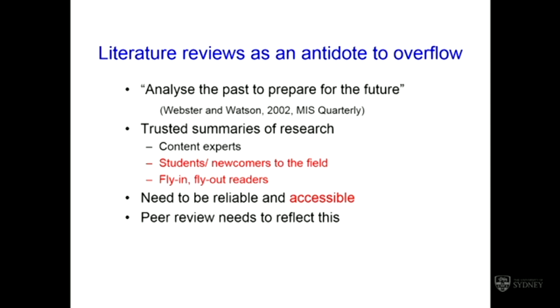Some examples of what I call fly-in, fly-out researchers — triaging results, making decisions about where their own research is going. But literature reviews are also read by newcomers to the field who intend to stay, such as students and early career researchers starting a new postdoc. Literature reviews really need to fulfil two needs: they need to be reliable, because people will believe what's written and possibly take action based on it; but the information also needs to be accessible to people who aren't content experts in that field. And when I started thinking about the peer review of literature reviews, I realised the peer review needs to reflect these two needs.